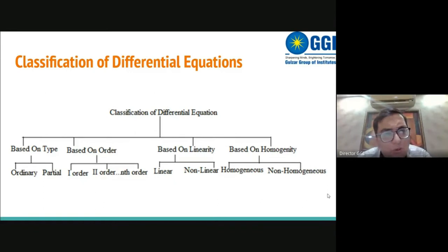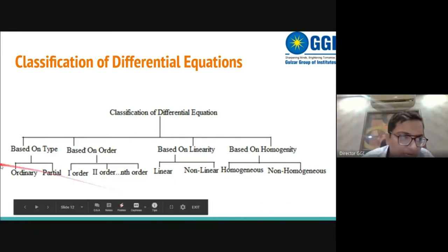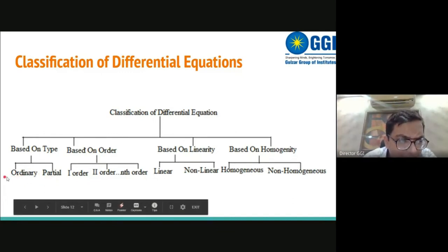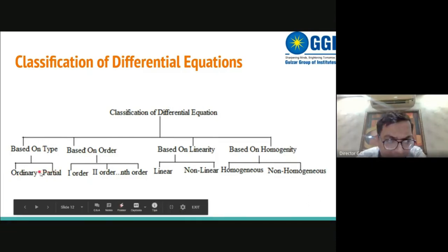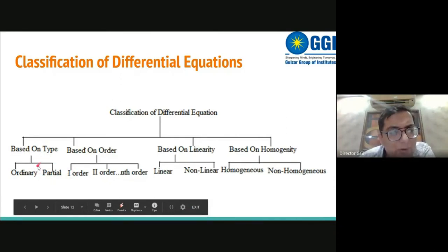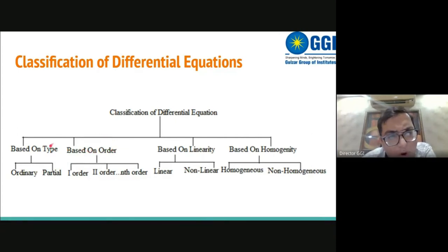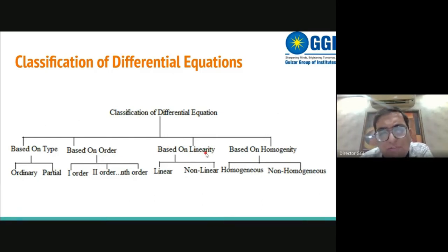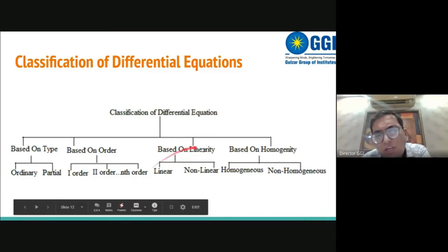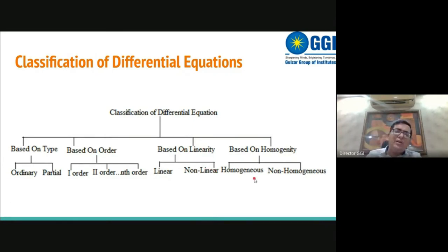Differential equations can be classified on four bases: type (ordinary or partial), order (first order, second order, etc.), linearity (linear or non-linear), and homogeneity (homogeneous or non-homogeneous). Ordinary differential equations have one dependent variable and one independent variable; partial differential equations have one dependent variable but more than one independent variable.